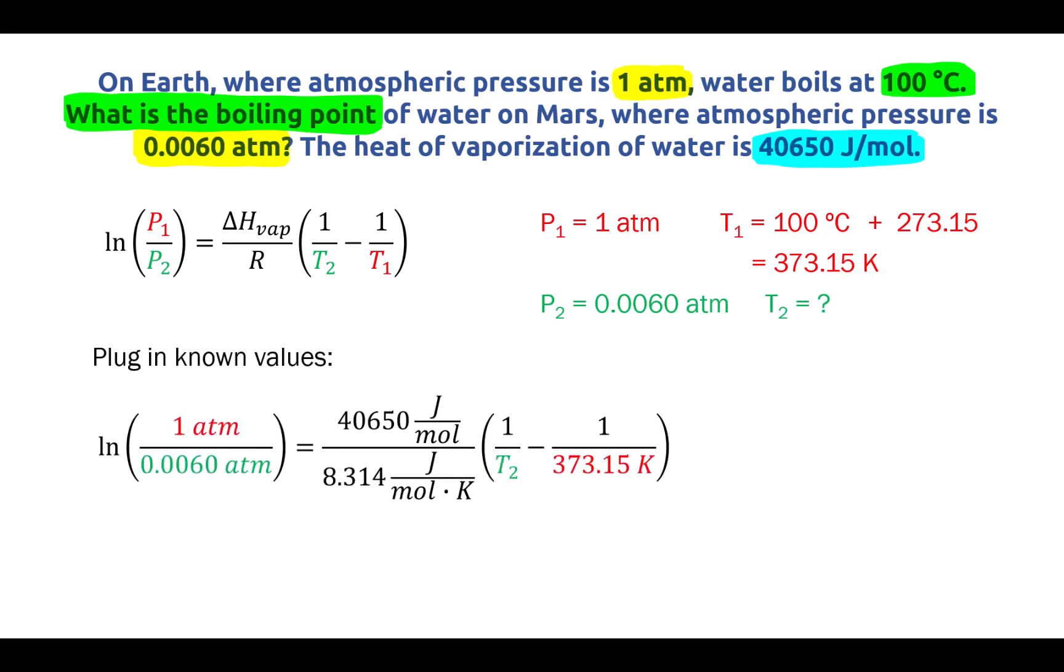Let's plug in our known values. On the left, I have plugged in 1 atm and 0.006 atm in our pressure values P1 and P2. On the right, I have plugged in our enthalpy of vaporization on the top, our gas constant R on the bottom, and I've plugged in our T1 value. T2 is the only value that is not known here.